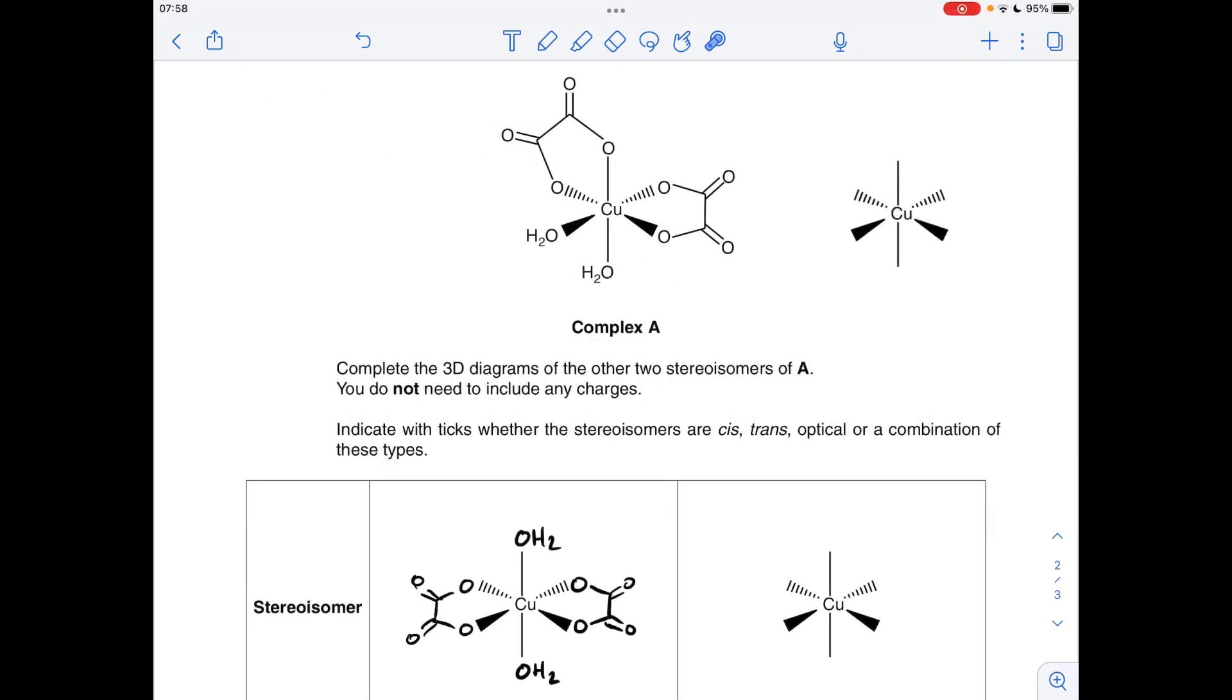Moving on to these 3D diagrams now, with the other two stereoisomers of A. So I've already populated the first one, so I've gone for the easy one first. So you can see in the one they've given us, complex A, the water ligands, you could compare these ligands if you wanted to, but the water ligands, they're at 90 degrees apart from each other. So this is actually, it's this isomer. I'll come on to that for the next one, but you can see in this one I've put the water ligands directly opposite each other, so they're at 180 degrees apart. I could have drawn them that way or that way, but I just think that's the easiest way to visualize them.